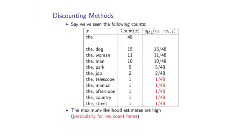Okay, so to understand discounting methods, let's first start with an intuition illustrated by the example I've shown here. So what I've shown is the counts for bigrams where the first word in the bigram is the word there. So for example, there followed by dog is seen 15 times. There followed by woman is seen 11 times. And so on and so on.